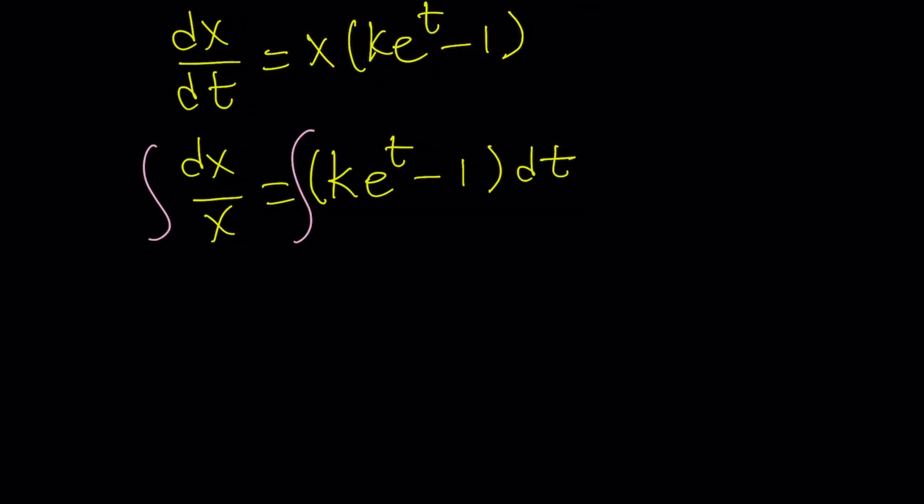When you integrate both sides, you're going to get on the left-hand side, again, we get to ln, but allow me to use positive values of x. I know some people are going to be mad because I didn't state it at the beginning. But anyways, this could be written as ln x or ln negative x if x is negative. And then the right-hand side, think about it. e to the power t is the derivative of e to the power t. So its integral is the same. So this is just going to be the same k times e to the power t, right? And then minus, since we're integrating with respect to t, this is just going to be t.